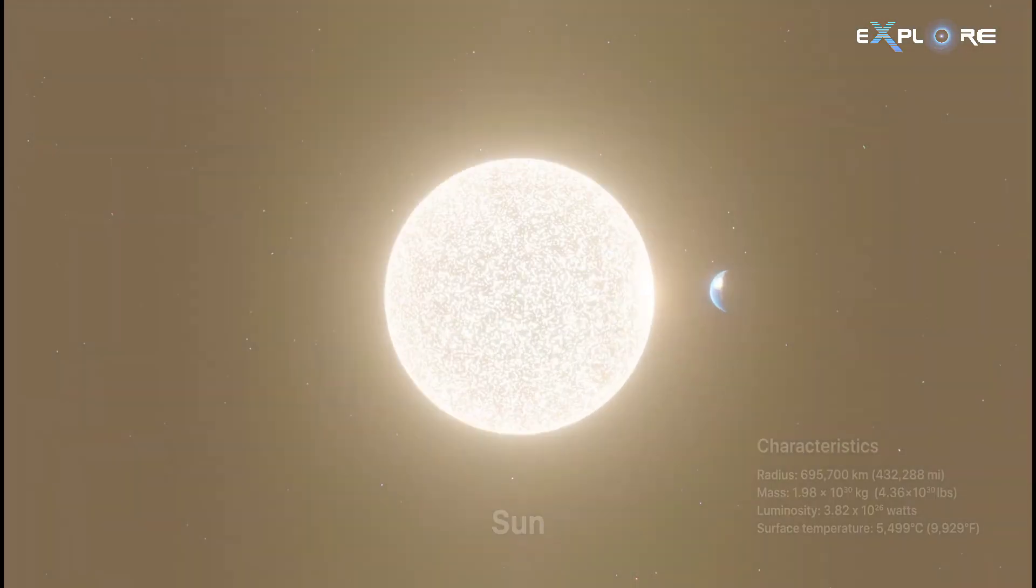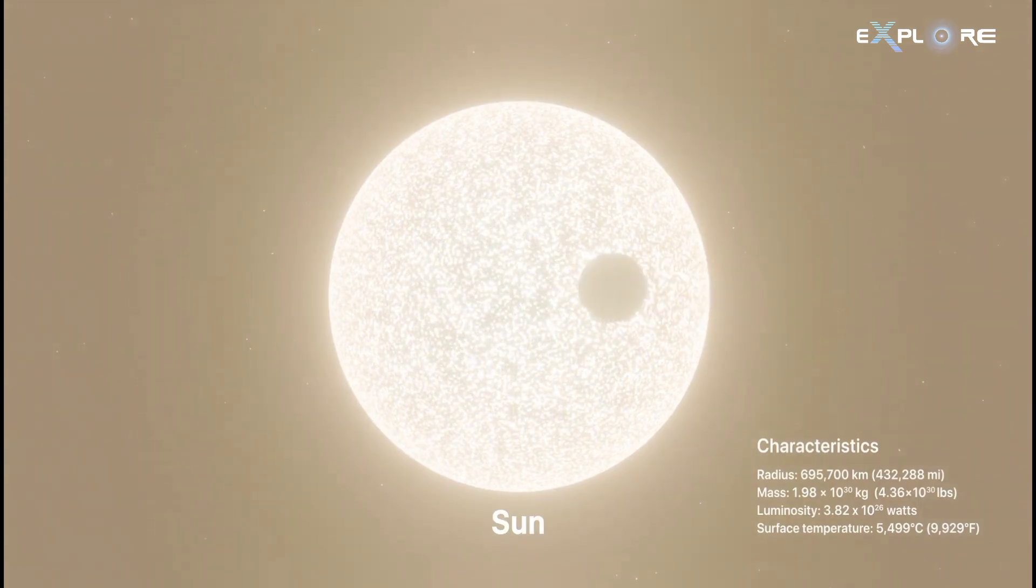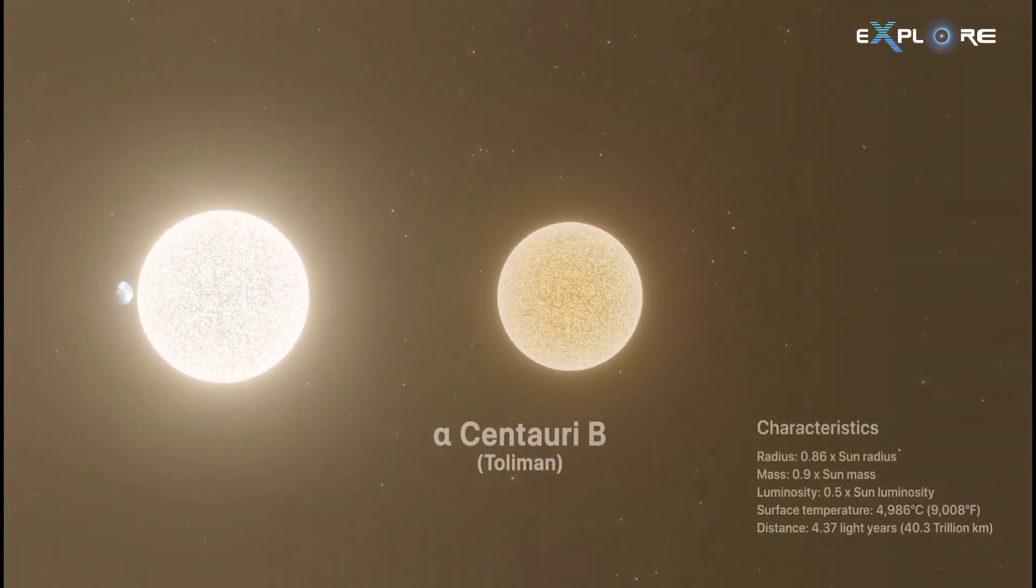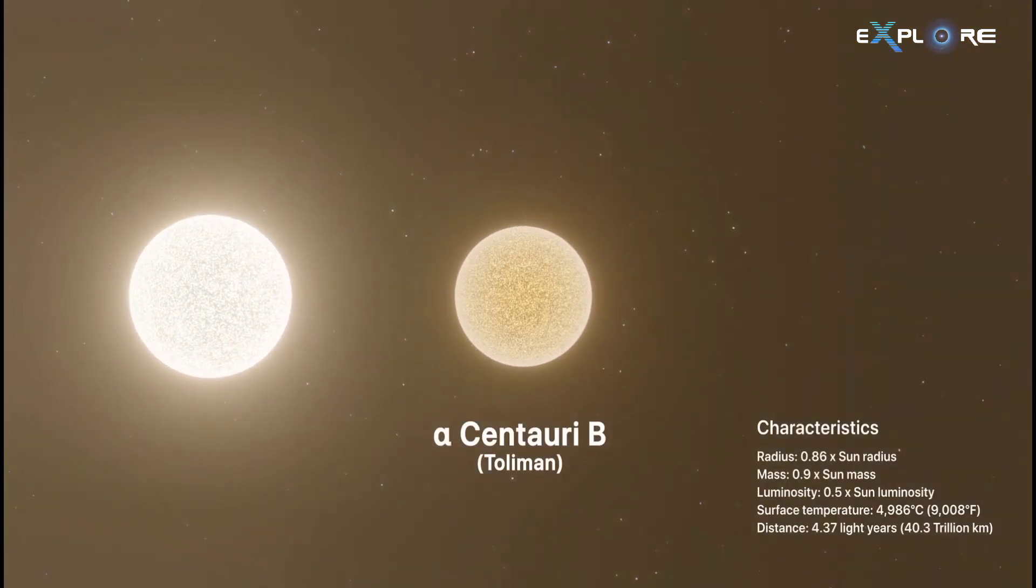Alpha Centauri A and B are similar to our sun in many ways. They're a bit like big siblings. While Alpha Centauri B, smaller and dimmer, displays an orange hue.